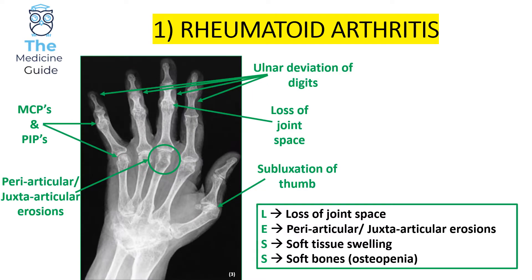This first image represents a patient who has rheumatoid arthritis. I use the mnemonic LESS to help identify it: Loss of joint space, periarticular or juxtaarticular Erosions, Soft tissue swelling, and Soft bones or osteopenia. Working clockwise from the top, we can see ulnar deviation of the digits — the digits appear quite crooked and deviated towards the ulnar side.